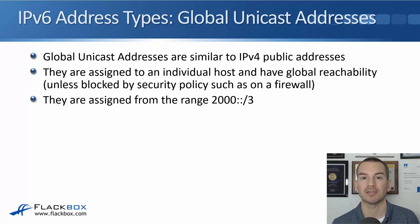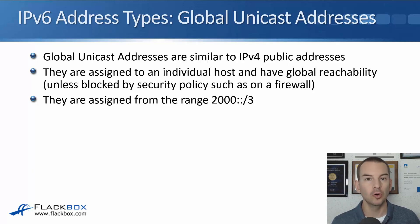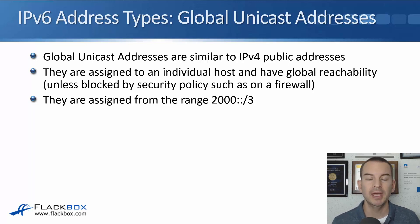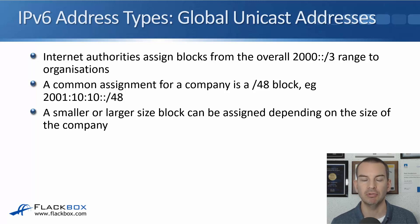Global unicast addresses are similar to IPv4 public addresses, meaning not private addresses. It is a publicly reachable address assigned by the internet authorities. Global unicast addresses in IPv6 are equivalent to that — they're assigned to an individual host and have global reachability everywhere on the internet, unless blocked by security policy like on a firewall. They're assigned from the range 2000::/3. The internet authorities assign blocks from that overall 2000::/3 range to different organizations that need to communicate on the internet.